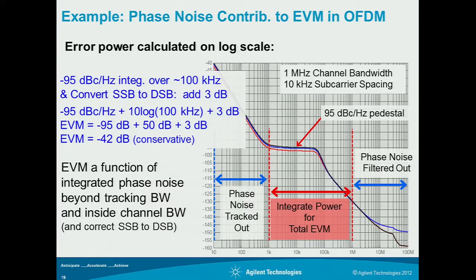In this case we're showing a one megahertz channel, so anything outside the one megahertz channel bandwidth is filtered off. Really, the only thing that matters is the phase noise in this region. You can see the phase noise rolls off at the 100 kilohertz offset, so we're just doing the integrated noise over this channel — anything out here looks to be pretty insignificant.